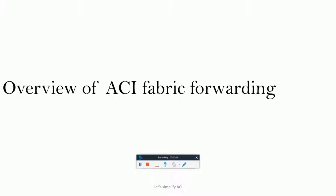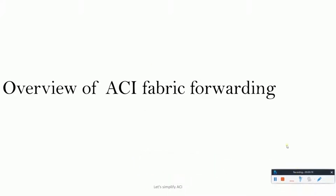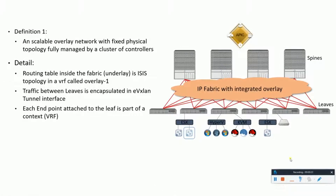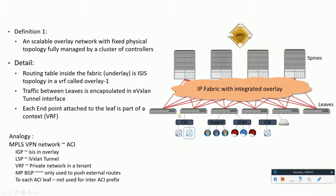Let's talk about how forwarding works inside the ACI fabric. ACI topology could be called an MPLS-based VPN network where ISIS is used in the overlay LSP for VXLAN tunneling, and VRF for virtual routing and forwarding for private networking among tenants. For routes coming in from outside, MPBGP is what is used in ACI.